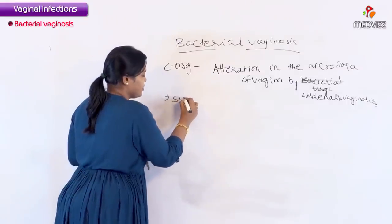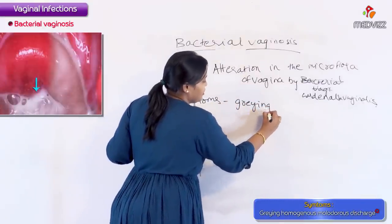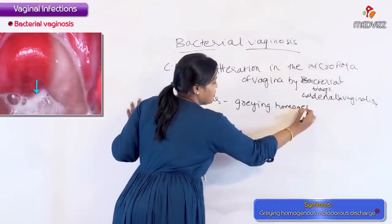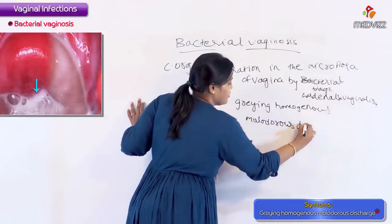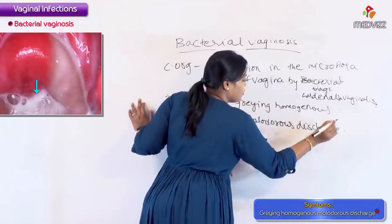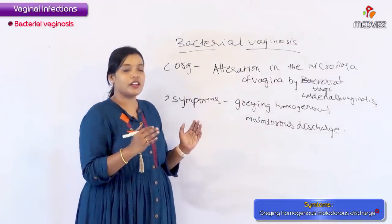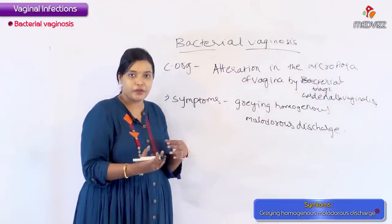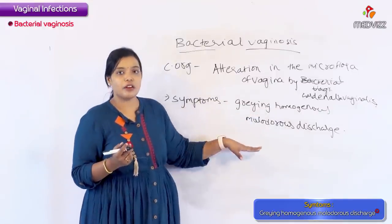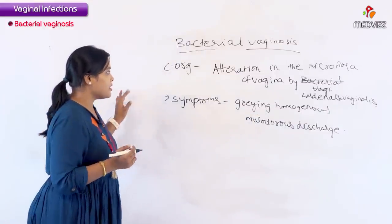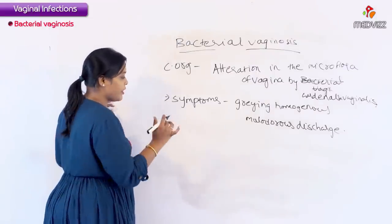For MCQ purposes: if asked whether bacterial vaginosis is caused by Gardnerella vaginalis or by alteration in the microflora by Gardnerella vaginalis, always choose the alteration in microflora option. The symptoms of bacterial vaginosis are grayish homogenous malodorous discharge. Unlike trichomonas and candidiasis, there is no itching or dyspareunia — only the foul-smelling discharge.